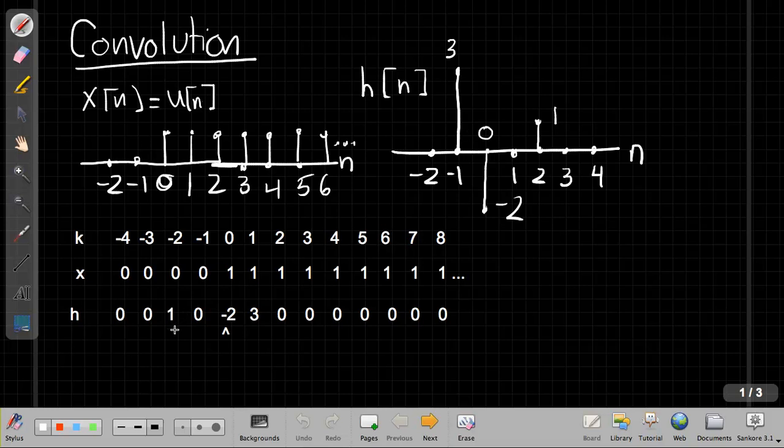So the flipped version starts at minus 2, then 0. I'm sorry, it has height of 1 at minus 2, and then 0, and then it's height minus 2, and then height 3 at n equals 1, and then 0 is everywhere else, which is what happens to this stuff over here when I flipped it. And again, I've kept my arrow to remind me where the 0 point is.